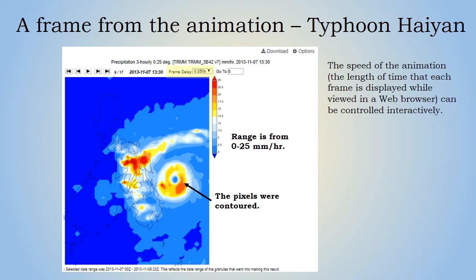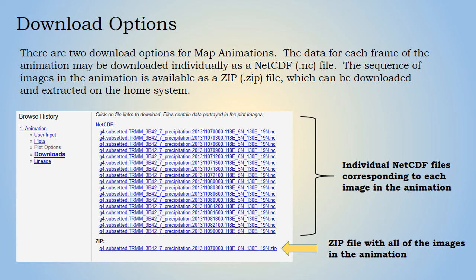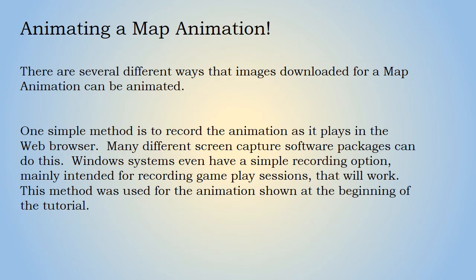The speed that the animation plays in the browser can be adjusted with the arrow keys. It is not possible to download a map animation in animated form directly from Giovanni. There are two download options: the data for each frame may be downloaded individually as a NetCDF .nc file, or the sequence of images is available as a zip file, which can be downloaded and extracted on the home system. One simple method to animate the images is to record the animation as it plays in the web browser using screen capture software. Windows systems even have a simple recording option, mainly intended for recording gameplay sessions, that will work. This method was used for the animation shown at the beginning of the tutorial.